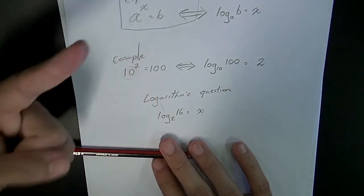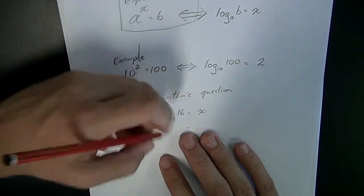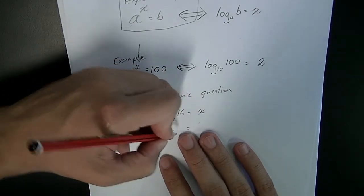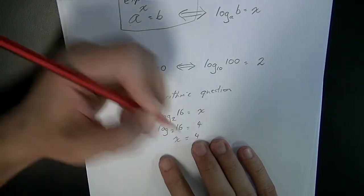2, 4, 8, 16. It's going to be log base 2 of 16. Our x value is 4, so x equals 4.